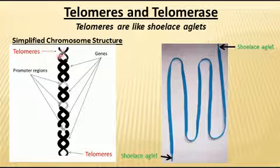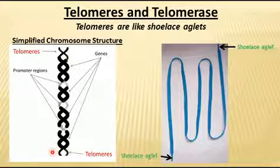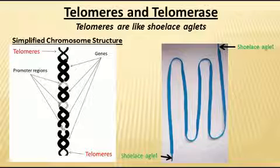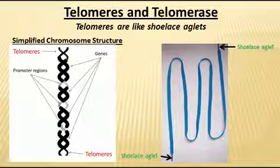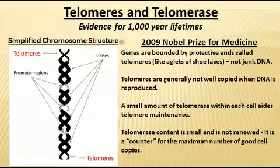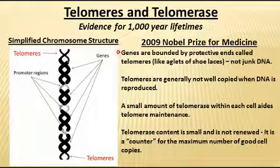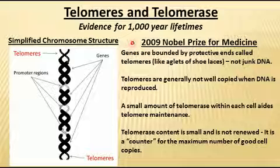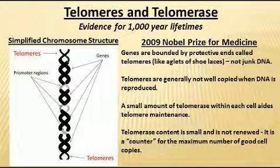The telomeres protect the integrity, usefulness, and faithfulness of the genetic material contained in each chromosome. They were called junk DNA in earlier times, but a Nobel Prize has resulted from the discovery that these telomeres are not only not junk, but are extremely important in the well-being and lifetimes of human beings and animals. A Nobel Prize was awarded in 2009 for medicine to the person who discovered that genes and chromosomes are bounded by these protective ends called telomeres.